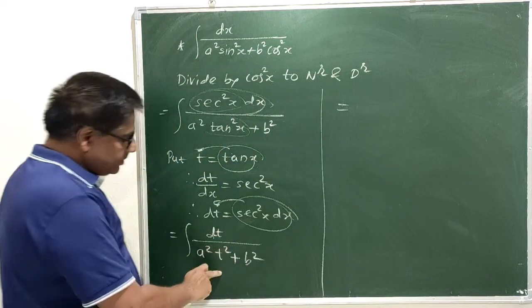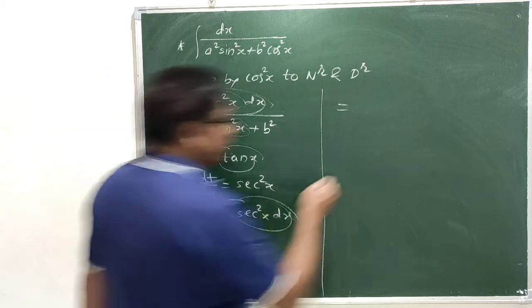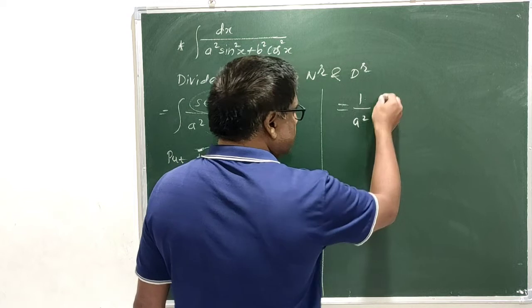Now, to turn out this problem into standard format, let us take a square common from denominator. 1 by a square. As it is constant, we can take it outside the integral.